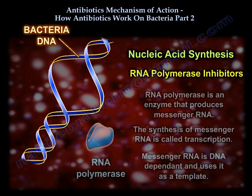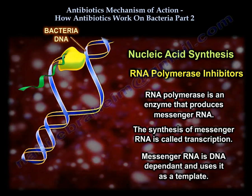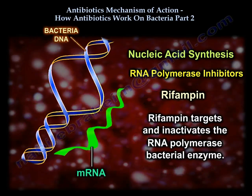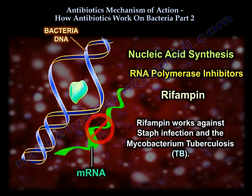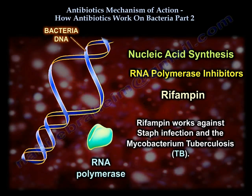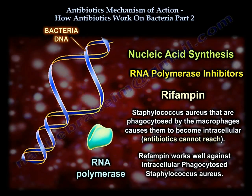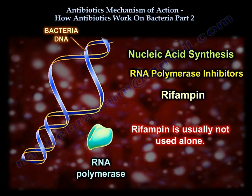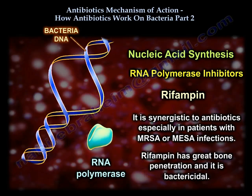For RNA polymerase inhibition, that is rifampin. Rifampin works against Staph and Mycobacterium tuberculosis. Sometimes Staph aureus is phagocytosed by macrophages and becomes intracellular, making it hard for antibiotics to reach. Rifampin is very effective against intracellular phagocytosed Staph inside macrophages. Rifampin is usually not used alone but is synergistic with other antibiotics, especially in MRSA or MSSA infections. It has great bone penetration and is bactericidal.